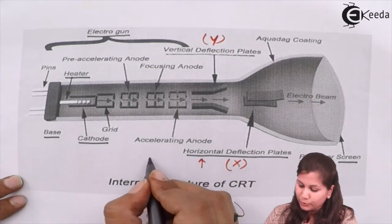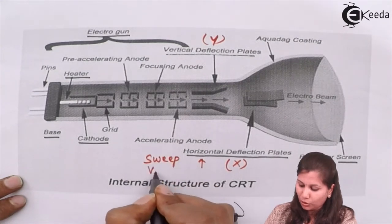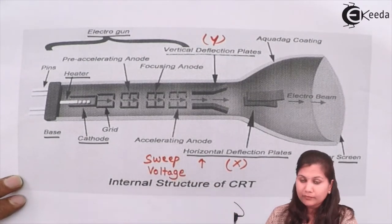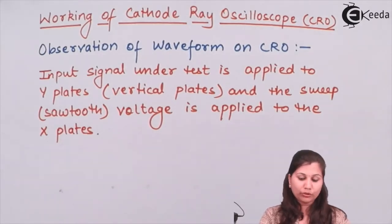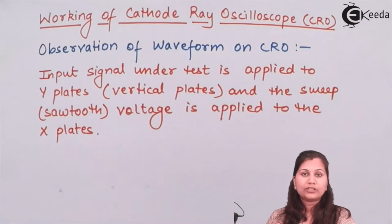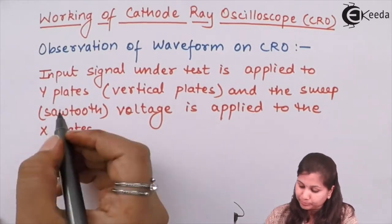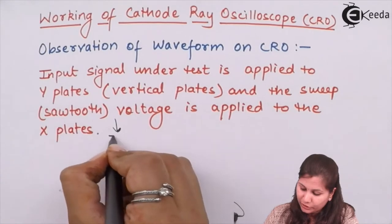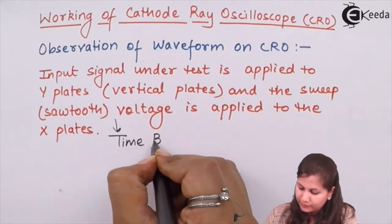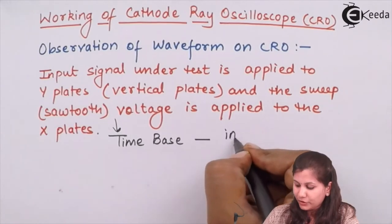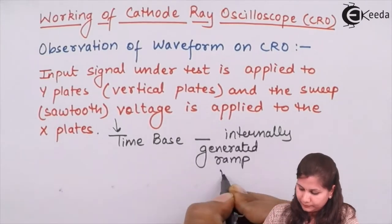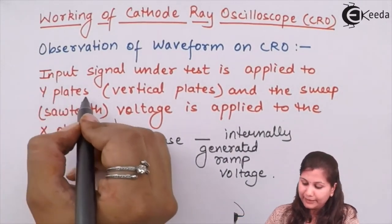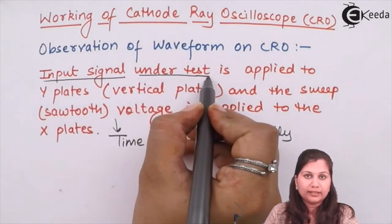To the horizontal deflection plates we apply a sweep voltage, also called a sawtooth voltage, which is known as the time base. The time base is an internally generated ramp voltage used when we want to get the waveform of the signal with respect to time. On the Y plates we provide the input signal which is under test.